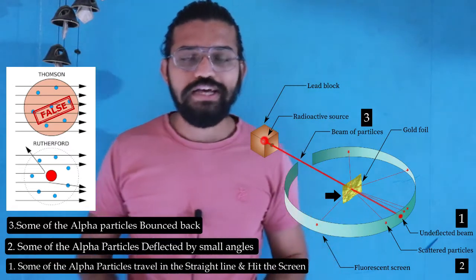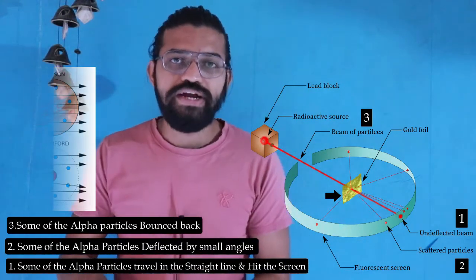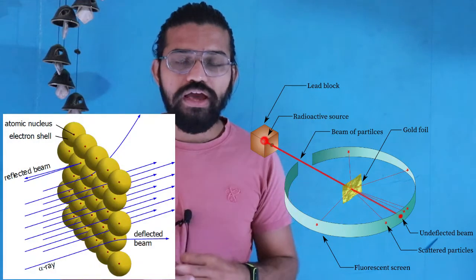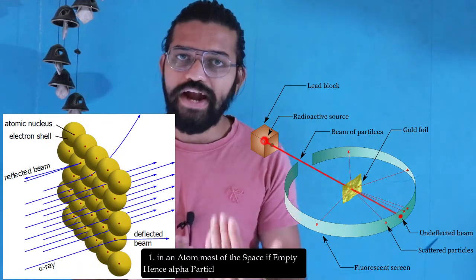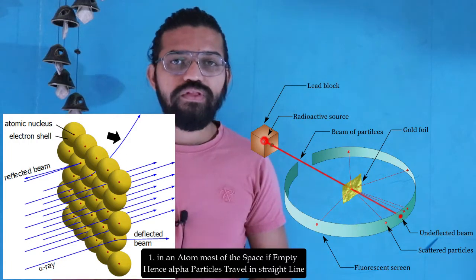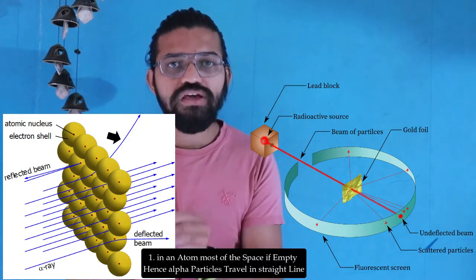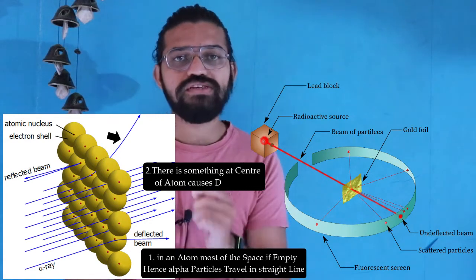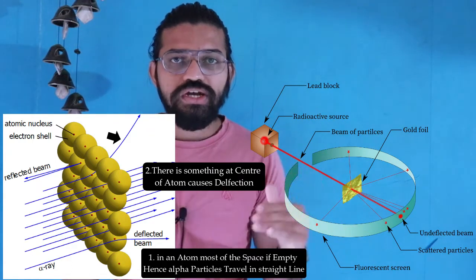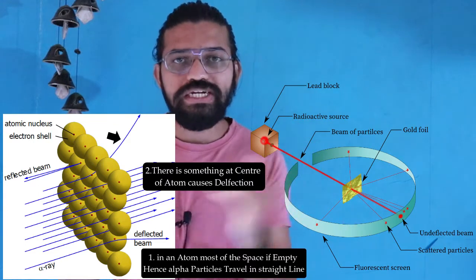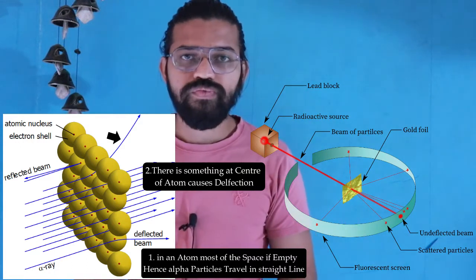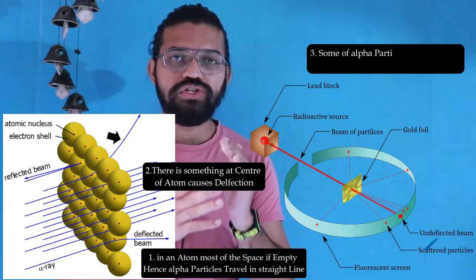He made a list of observations. First, some of the rays passed straight through the atom — meaning there is empty space inside the atom. Second, some rays were slightly deflected, meaning at the center of the atom there is something with high density and higher energy. This is why, when the high-energy, high-mass alpha particles approach the atom, some are deflected at small angles.